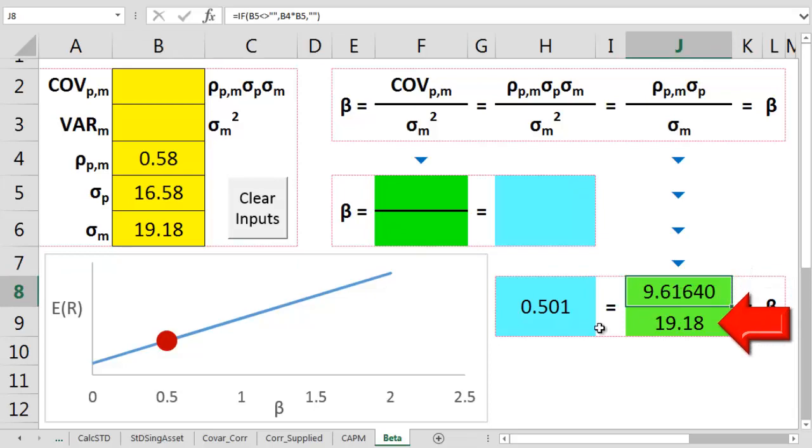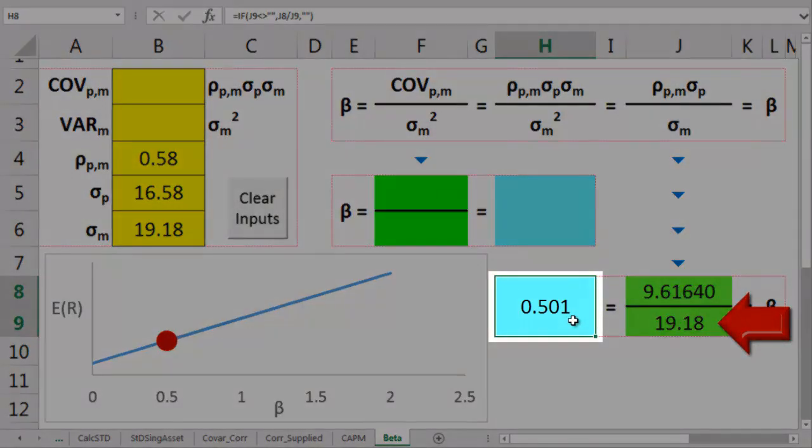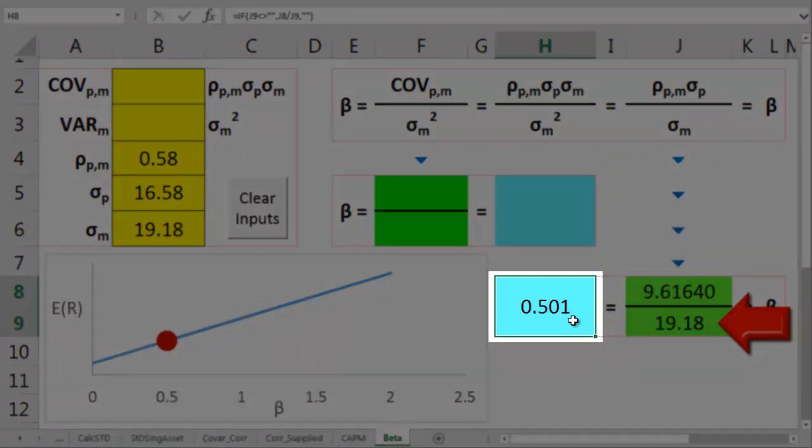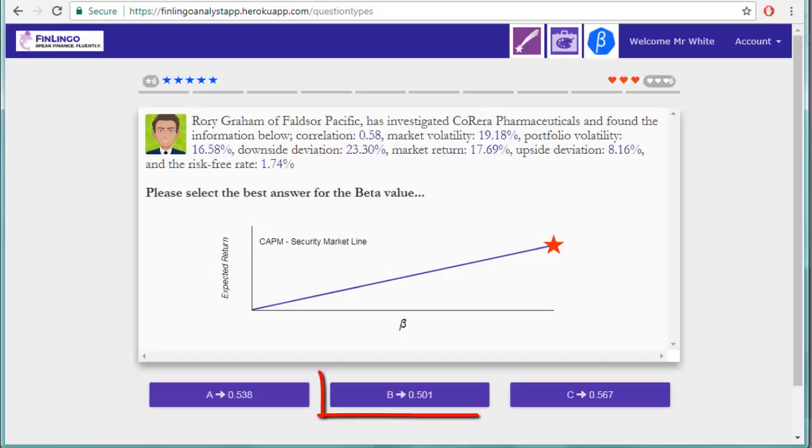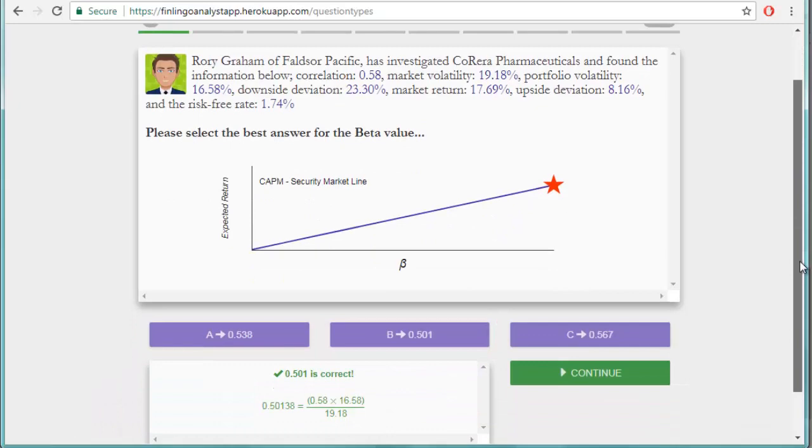Next, we divide this number by the market standard deviation, or sigma, to get to a beta value of 0.501. Once again, let's get back to Finlingo to check the workings. And it's all looking fabulous!